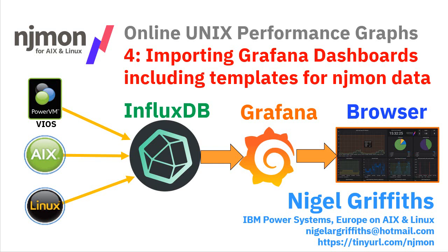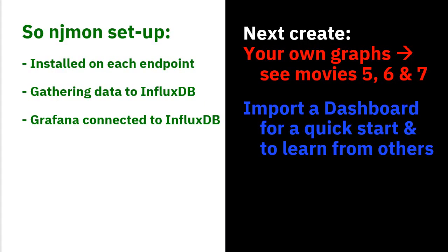This series of videos is talking about njmon, a data gatherer that collects data from Linux, AIX and the VIO server, and puts it into various time series databases like InfluxDB and Grafana for the graphs. This is number four. We're going to import Grafana dashboards, including templates, for the njmon data, so you rapidly get a whole bunch of graphs in one go. I'm going to assume you'll be watching the videos in order and even have the software installed.